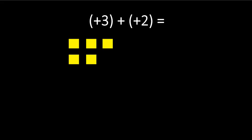So we have all the tiles drawn in. Let's count how many tiles we have all together. We have 1, 2, 3, 4, and 5 — so we have 5 tiles all together. We have 5 yellow tiles, and yellow means positive, so we are going to add a positive sign in front of the 5. So positive 3 plus positive 2 is positive 5.